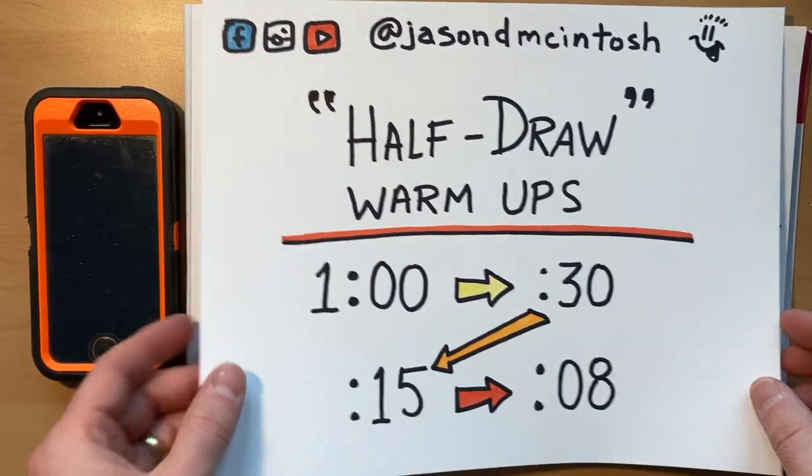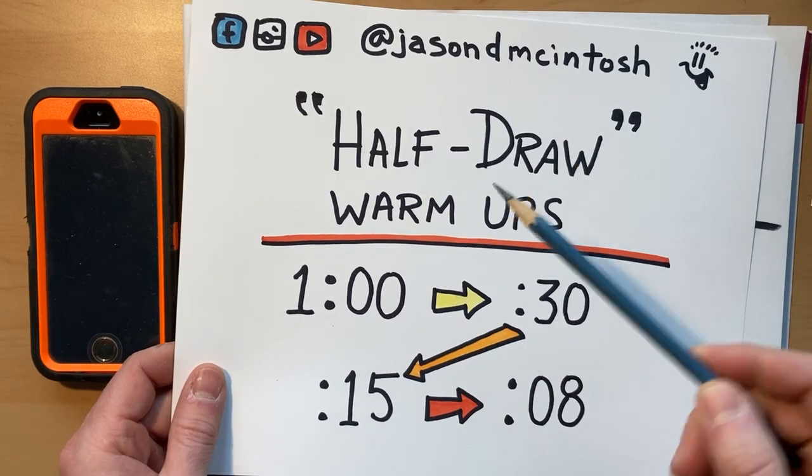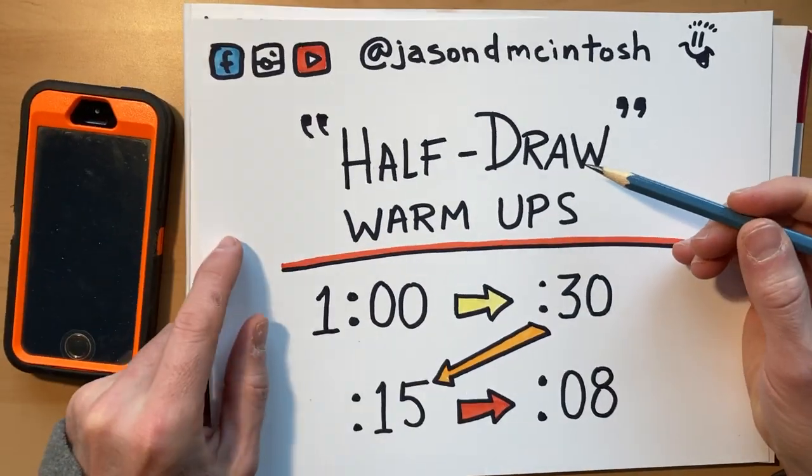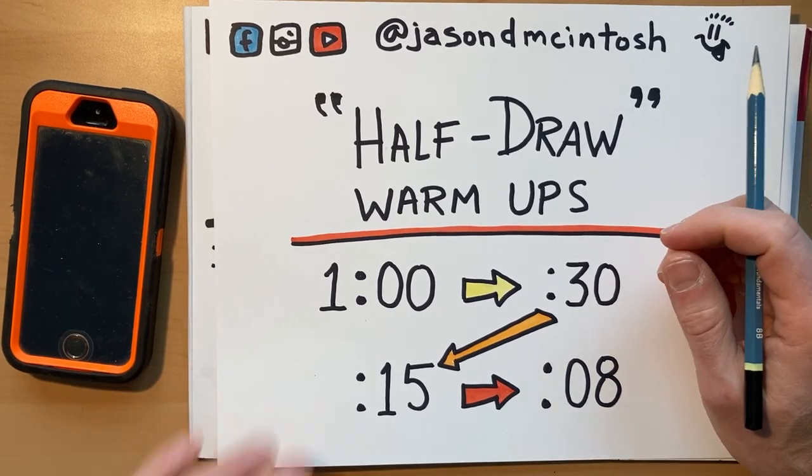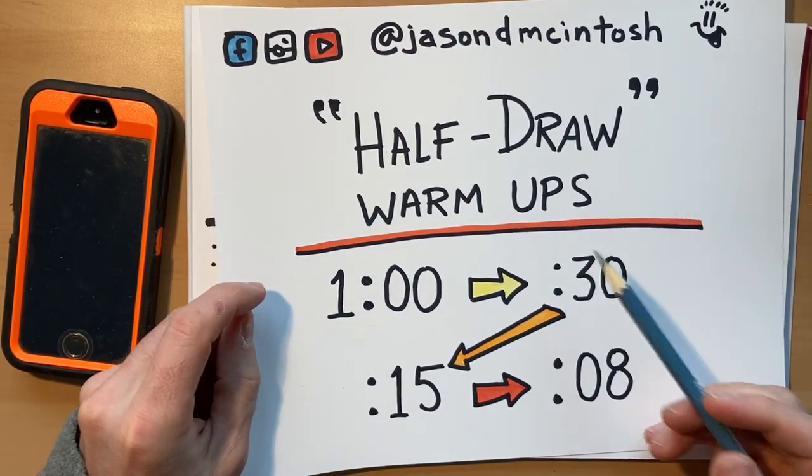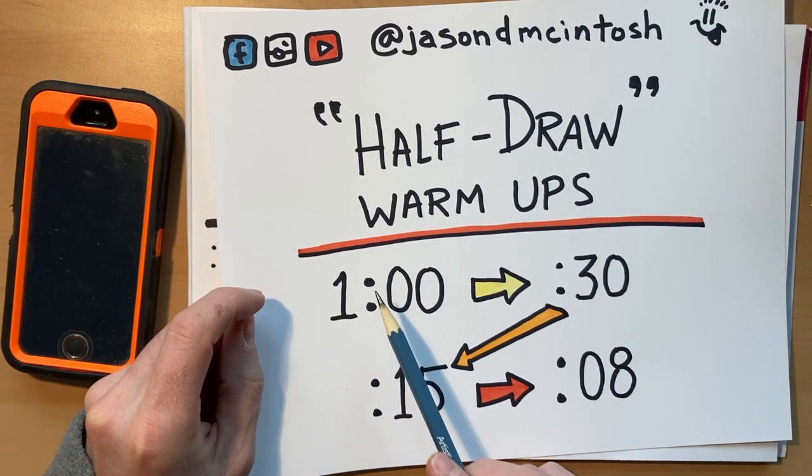Hello again, Jason McIntosh here one more time with another half-draw warm-up in my attempt to get a little speedier with my drawings. Today we're going to try this again. The rules are four sections. First thing on the prompt, I'm going to draw for one minute, then 30 seconds,